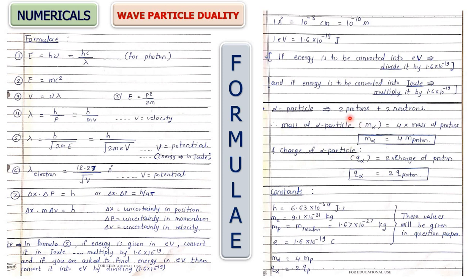Mass of alpha particle = 4 × mass of proton, because mass of proton and neutron are the same. Charge of alpha particle: neutrons are neutral, so charge of alpha particle = 2 × charge of proton. Here charge is denoted by e or q. Remember these: mass of alpha particle = 4 × mass of proton, and charge of alpha particle = 2 × charge of proton.